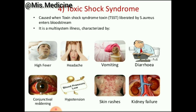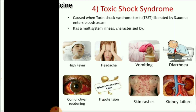Toxic shock syndrome occurs when toxic shock syndrome toxin liberated by Staphylococcus aureus enters the bloodstream, causing symptoms like high fever, headache, vomiting, diarrhea, conjunctival reddening, decrease in blood pressure, skin rash, and kidney failure.